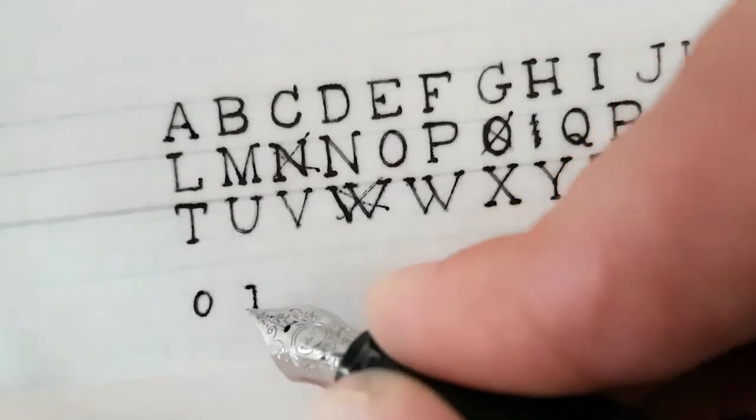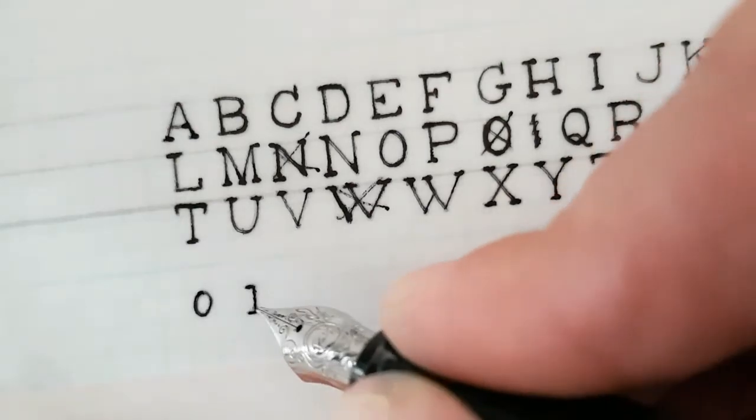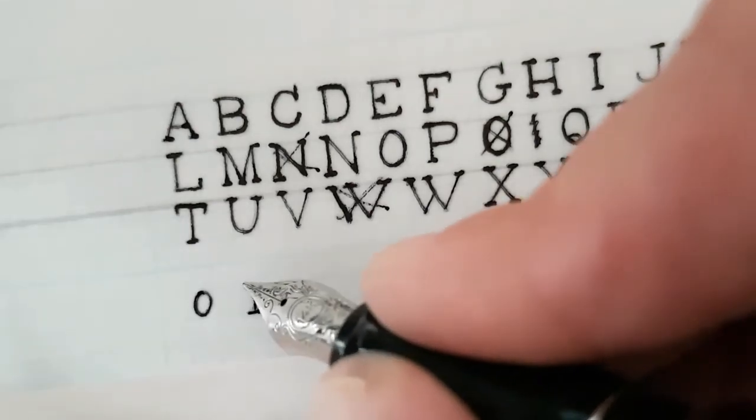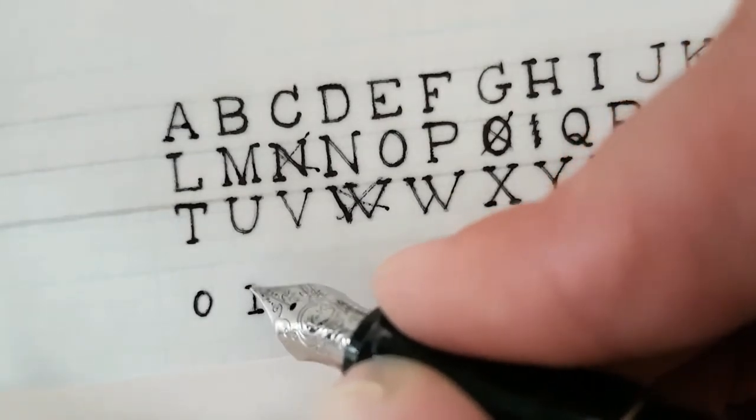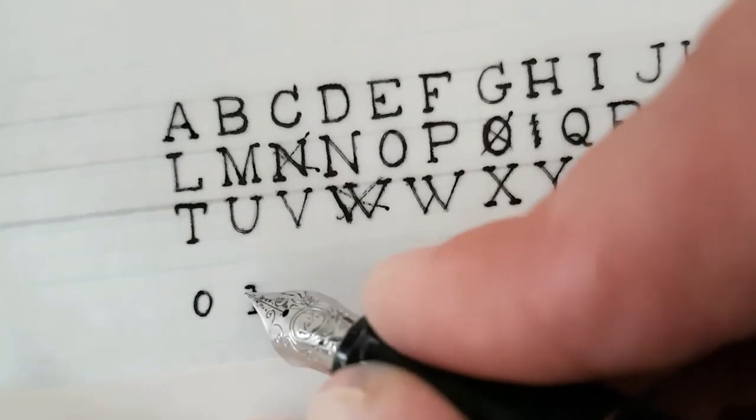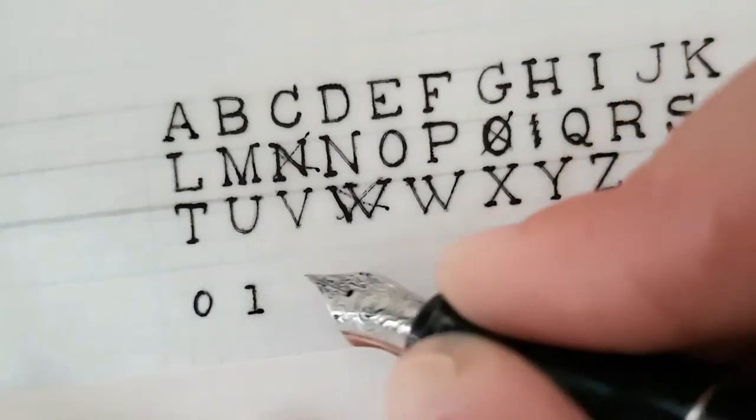Then the one. To distinguish the one from the I, this little flip here is completely horizontal. When the I would have the serif moving in at an angle, this is horizontal.